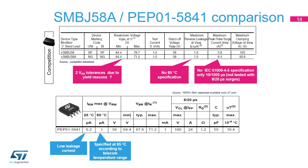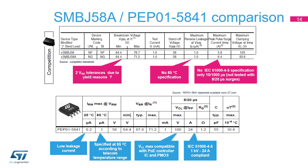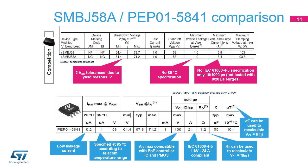This is 5 times lower than all competitors. The PEP-01 provides two big advantages regarding surge capability. First, it is rated with 24 amperes, 8 by 20 microsecond surge, to comply with IEC 61000-4-5 at 1 kilovolt. Second, the maximum clamping voltage is 100 volts to be compatible with POE controller technology or 100-volt power MOSFETs. We also specify the dynamic resistance RD to calculate the maximum clamping voltage VCL whatever the surge current is, using a formula given in the datasheet. Additionally, alpha-T can be used to calculate the maximum clamping voltage VCL max depending on the temperature, with a formula given in the datasheet.